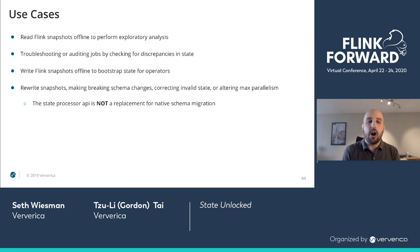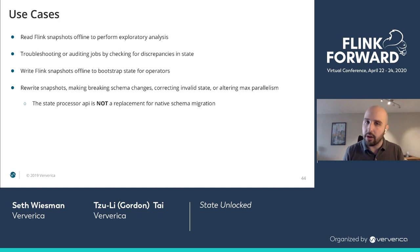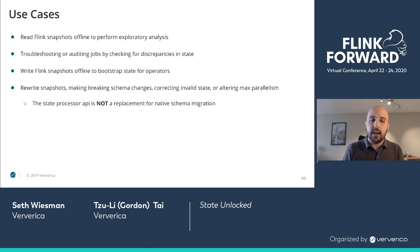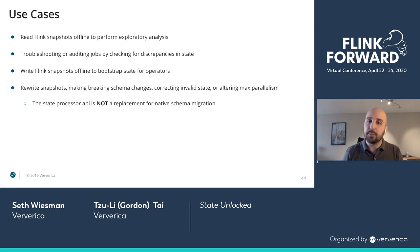Some use cases for the State Processor API include performing offline or exploratory analysis of your state. This is a batch library for processing save points. Think of it as running a SELECT statement on your production database — just trying to get a sense of what is going on inside. We may use it for auditing or troubleshooting our jobs. Perhaps we are getting bad results and do not know if it is the Flink code or another system. We can take a peek under the covers and see if the values in state for particular keys are what we expect — a sanity check. If the data is as expected, Flink is not the problem. If it is not what we expect, we have likely released a bug into production.